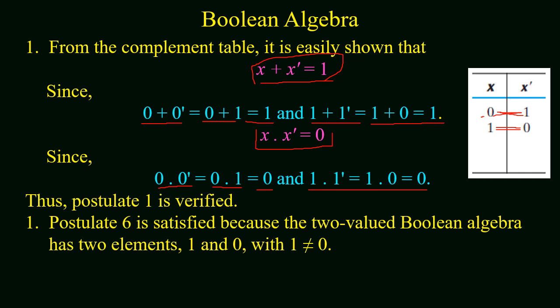And this verifies postulate 1. Now postulate 6 is also verified for the two-valued Boolean algebra because it has two different elements, 1 and 0.